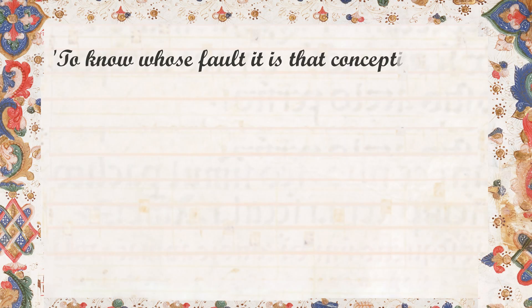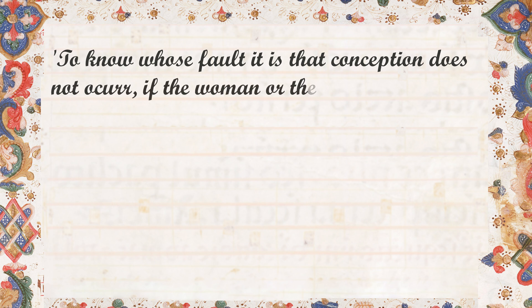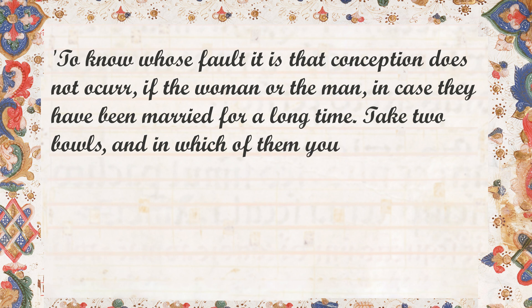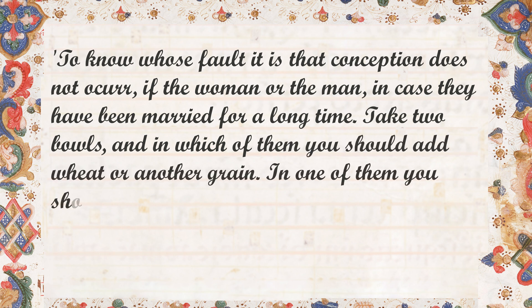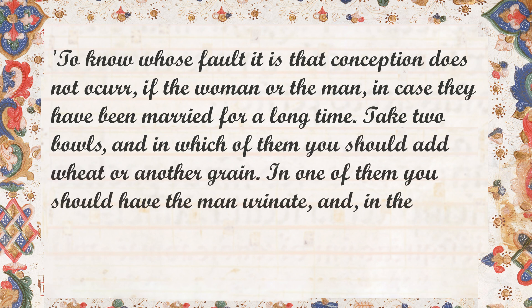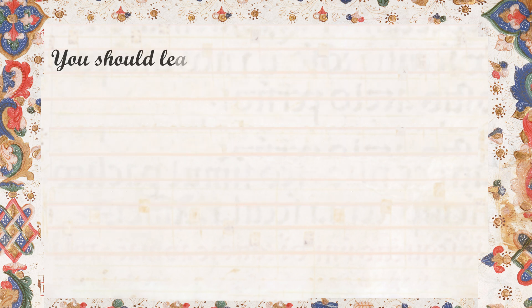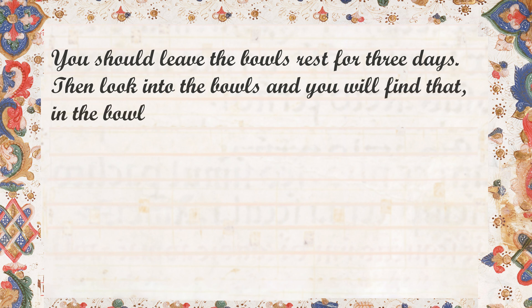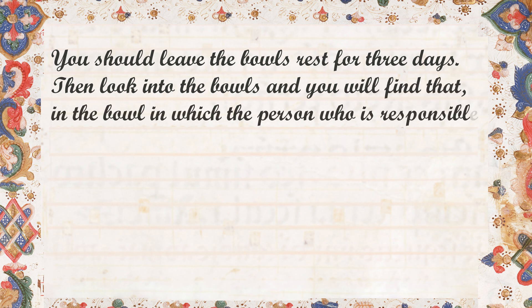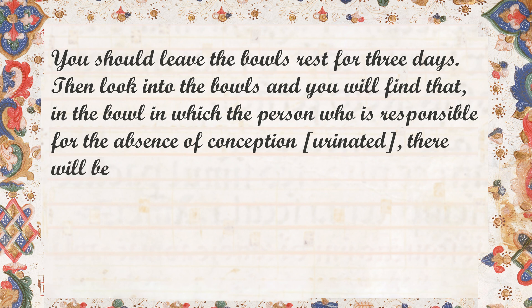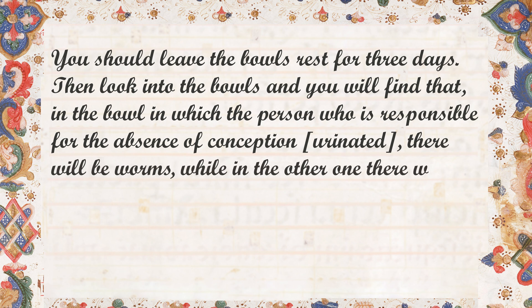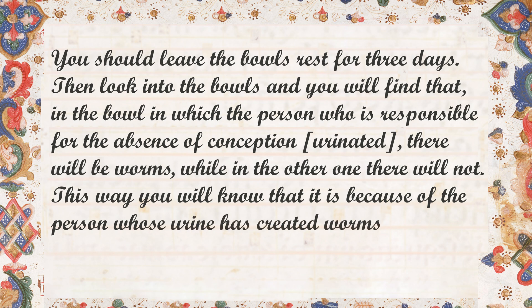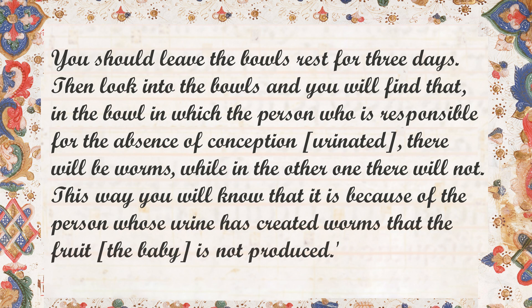To know whose fault it is that conception does not occur, if the woman or the man, in case they have been married for a long time — take two bowls and in which of them you should add wheat or another grain. In one of them you should have the man urinate and, in the other, the woman. You should leave the bowls to rest for three days. Then look into the bowls and you will find that in the bowl in which the person responsible for the absence of conception urinated, there will be worms, while in the other one there will not. This way, you will know that it is because of the person whose urine has created worms that the fruit — the baby — is not produced.